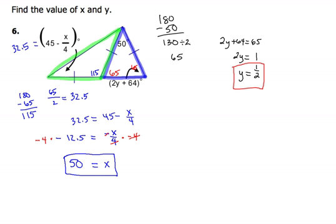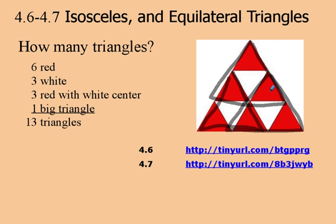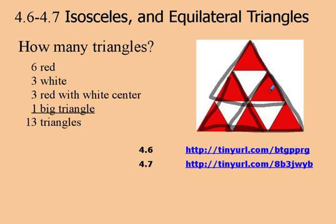Let's go back to our triangle puzzle. The correct answer is 13 triangles total: six red triangles, three white triangles, three triangles that are red with a white center, and the one large triangle that makes up the entire figure. That gives a grand total of 13. Don't forget to go ahead and do the required questionnaire. That's it for today, boys and girls — I'll see you again in class very soon. Have a great day!